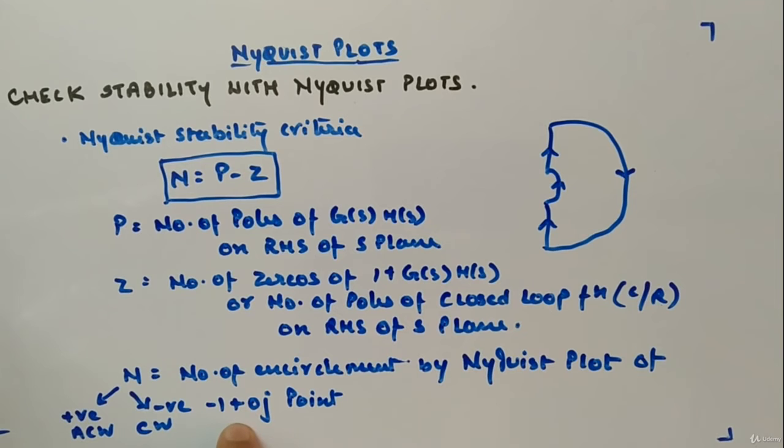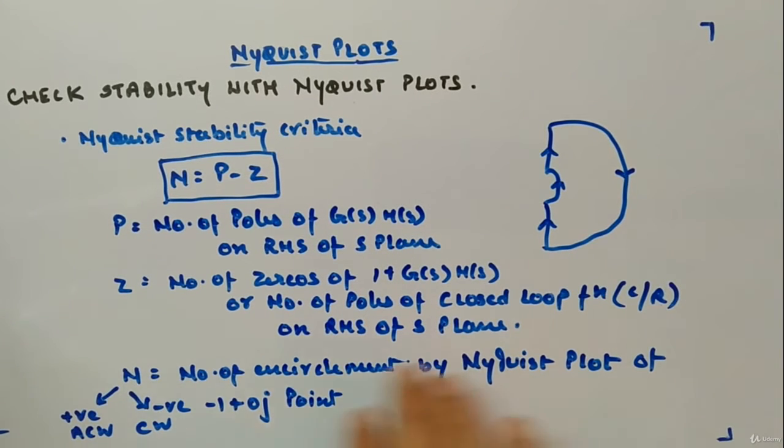We will see in Nyquist plot how many encirclements Nyquist plot is taking of this point. If it is encircling this point clockwise, we will have this N value negative. If it is covering anticlockwise direction, we will take it as positive.